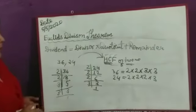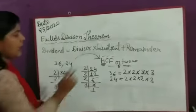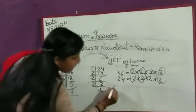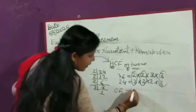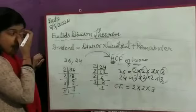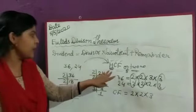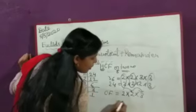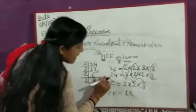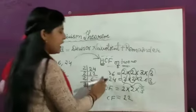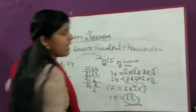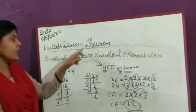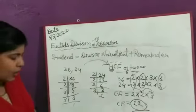See, 2 is common here. Again 2 is common here, and this 3 is common. So common factors are 2 × 2 × 3. Now we're talking about the highest common factor. 2 × 2 = 4, and 4 × 3 = 12. So the highest common factor of 36 and 24 is 12. In this way we find out the HCF.